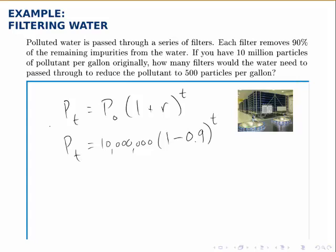And the question asks, how many filters will this water need to pass through to reduce the pollutant to 500 per gallon? In other words, what will T be in order for P_T to be 500? So we'll let P_T equal 500 and solve for T.